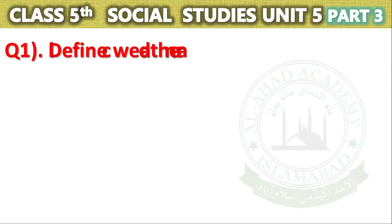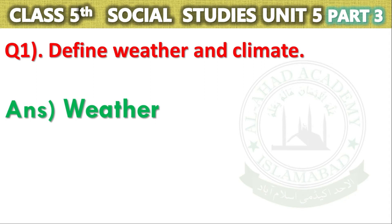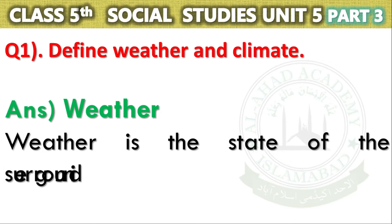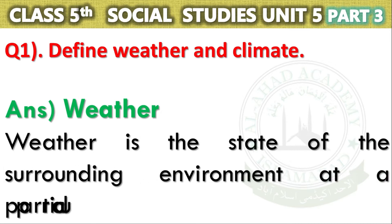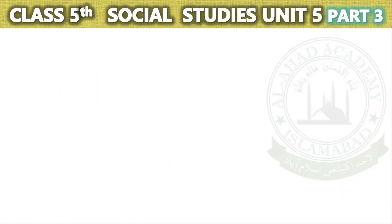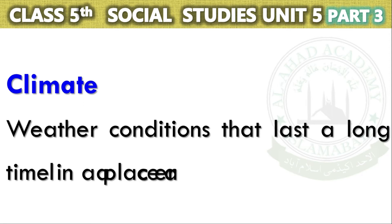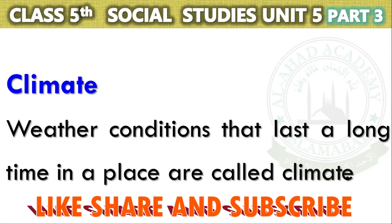Question No. 1: Define Weather and Climate. Answer — Weather: Weather is the state of the surrounding environment at a particular place and time. Climate: Weather conditions that last a long time in a place are called climate.